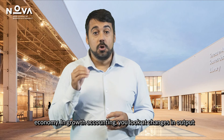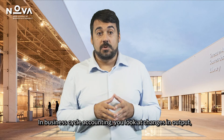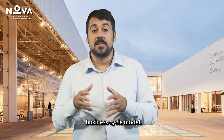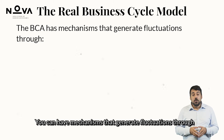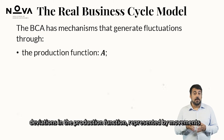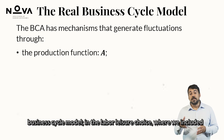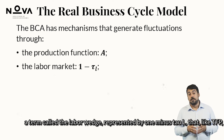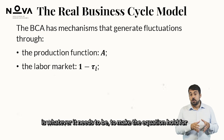They emphasize that deviations from equilibrium conditions in the RBC model represent underlying mechanisms generating fluctuations. In growth accounting, you look at output changes through the lens of the production function. In business cycle accounting, you look at changes in output, investment, and hours worked through the lens of the equilibrium business cycle model. You can have mechanisms generating fluctuations through deviations in the production function — represented by movements in total factor productivity — in the labor-leisure choice, where a term called the labor wedge (1 minus tau_L) is included.